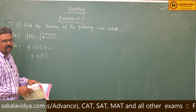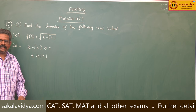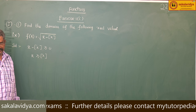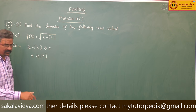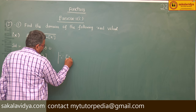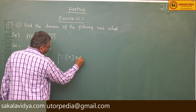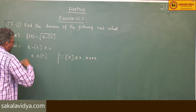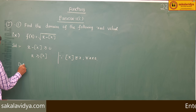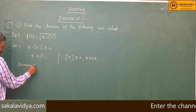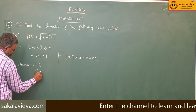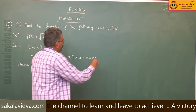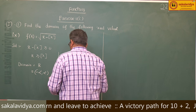As per the definition of the greatest integer function, [x] is always less than or equal to x for every x belonging to ℝ. Therefore, this condition is always satisfied, and domain is equal to ℝ, that is (−∞, ∞).